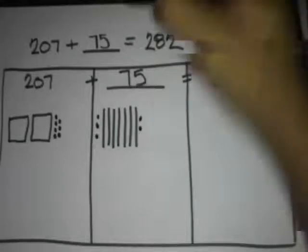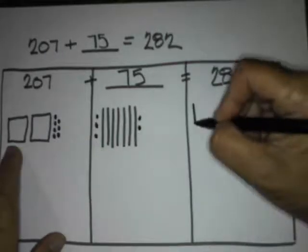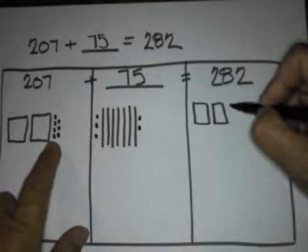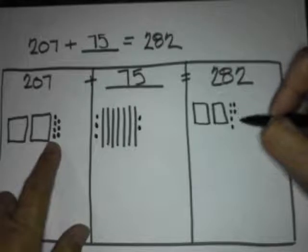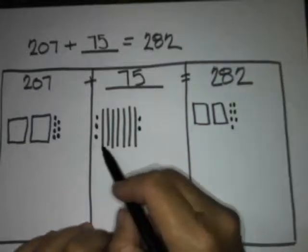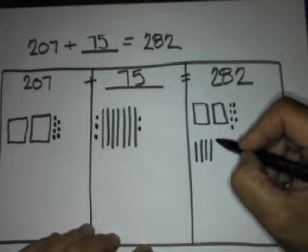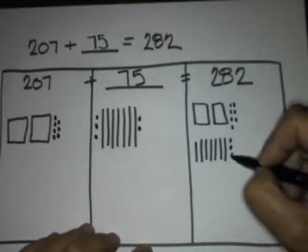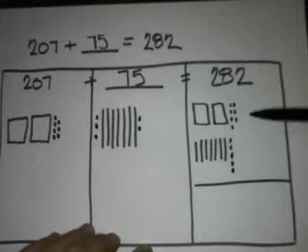Now we're going to take all of this and draw it in this box. What do we have here? 100, 200. Now what do we have here? 201, 202, 203, 204, 205, 206, 207. Now we're going to draw this right underneath it: 10, 20, 30, 40, 50, 60, 70, 71, 72, 73, 74, 75.